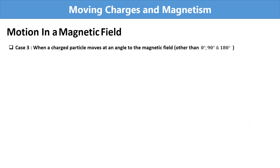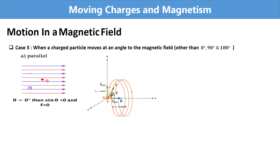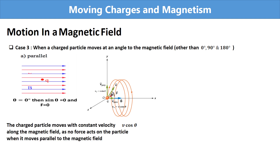Now we will see Case 3 in detail. When a charged particle moves parallel to the magnetic field, θ equals 0 degrees and the force equals zero. Comparing with the present situation, in the figure vcosθ is parallel to the magnetic field. That means the charged particle moves with constant velocity vcosθ along the magnetic field, because no force acts on the particle when it moves parallel to the field.